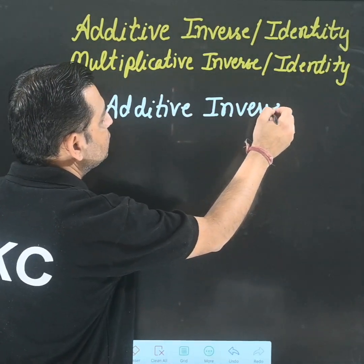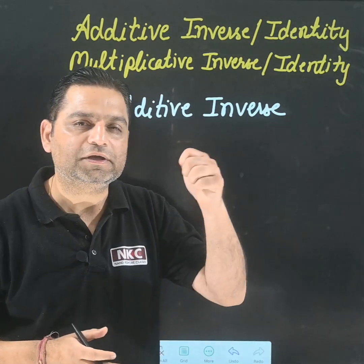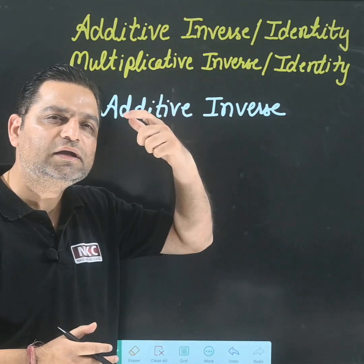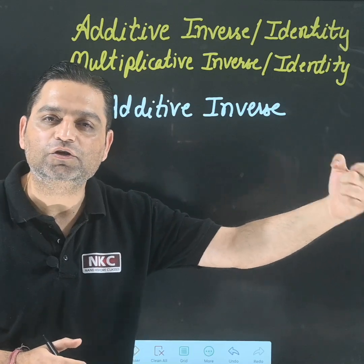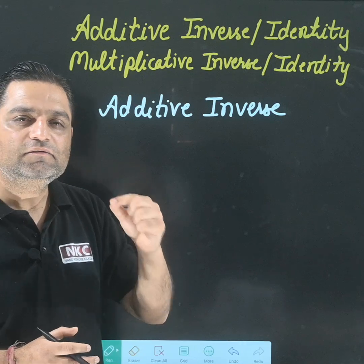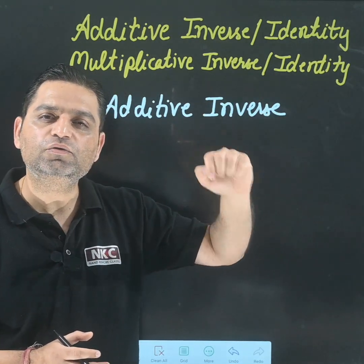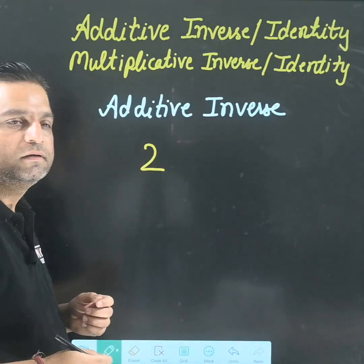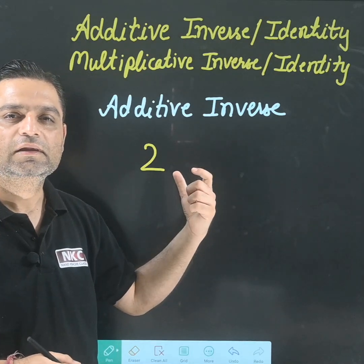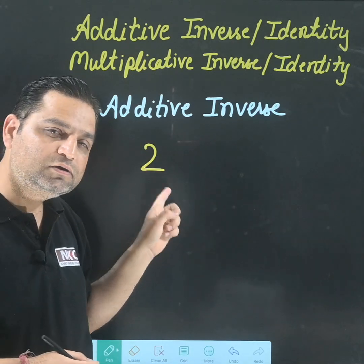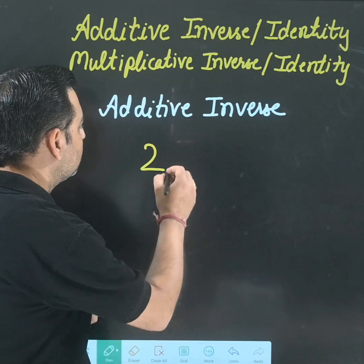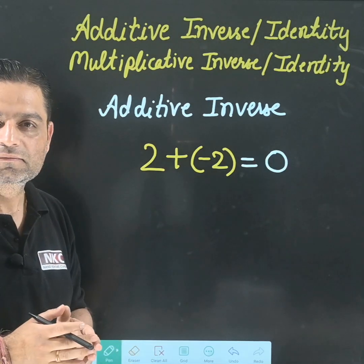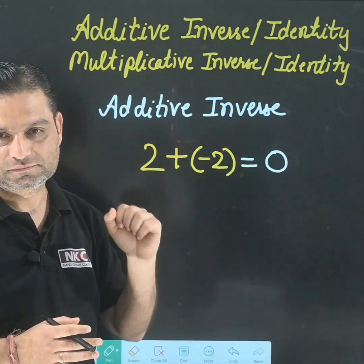I am going to start from additive inverse first. In additive inverse, one should think: what should I add so that the result becomes zero? Listen carefully — additive inverse means what should I add so that the result becomes zero. For example, if you have the number 2 and somebody asks the additive inverse, you should think: what should I add to 2 to get zero? That means I am going to add negative 2.